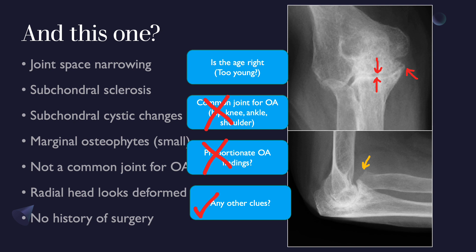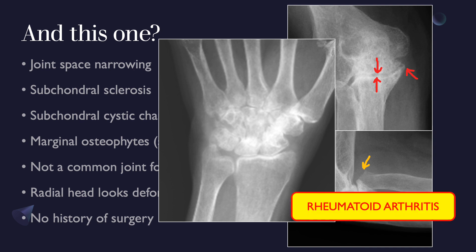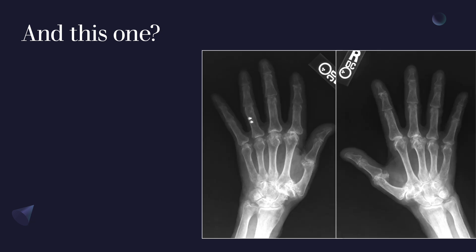The radial head deformity and the elbow involvement suggest a long-standing underlying process. When we look at the hand radiograph of this patient, we find crowding of the carpal bones with cystic changes — fitting with rheumatoid arthritis. This is end-stage rheumatoid arthritis affecting the elbow.